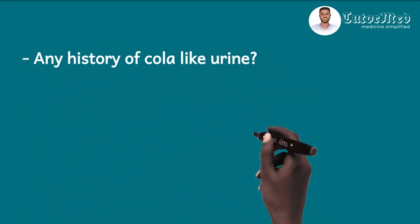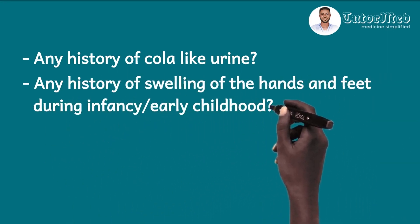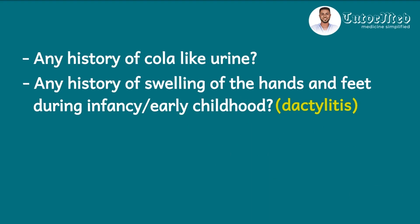For sickle cell anemia, the questions that can be asked include: is there a history of seasonal or recurrent bone pain, which may indicate vaso-occlusive crisis? Is there a history of jaundice? Is there a family history of sickle cell disease? We can also ask for a history of cola-colored urine, which might indicate a hyperhemolytic crisis. We can ask about any history of swelling in the hands and feet during infancy or early childhood, which can point to dactylitis.